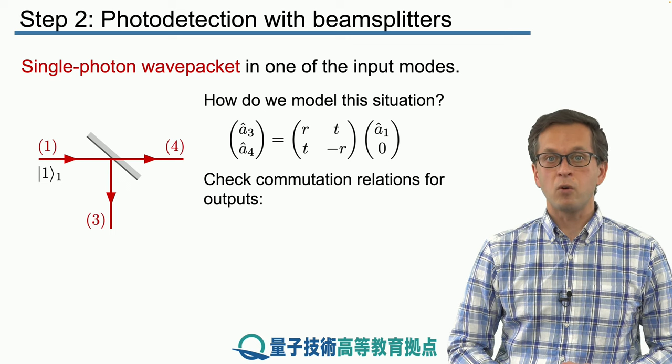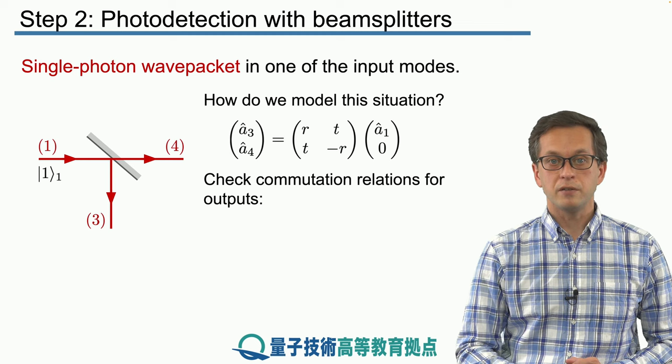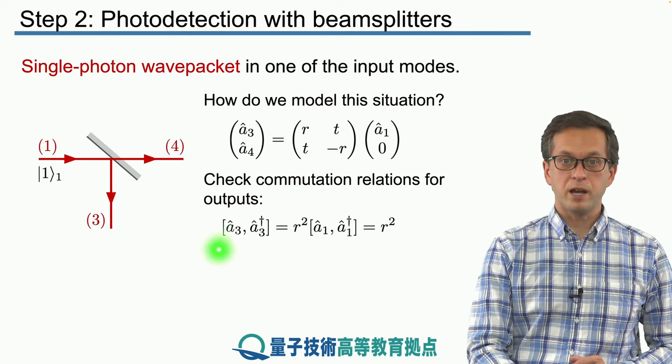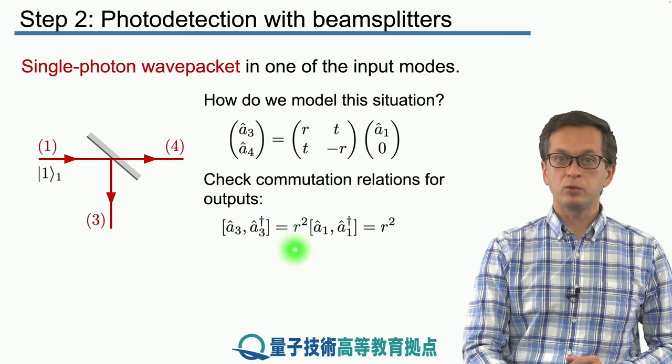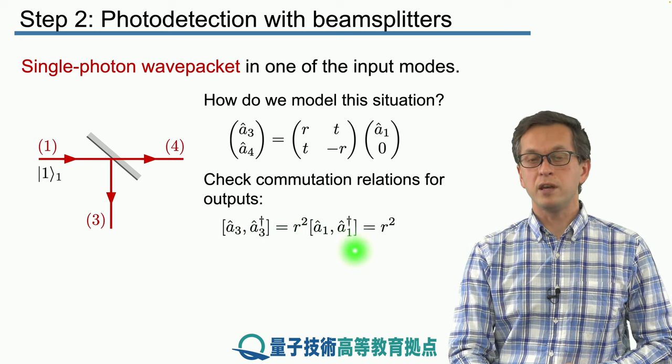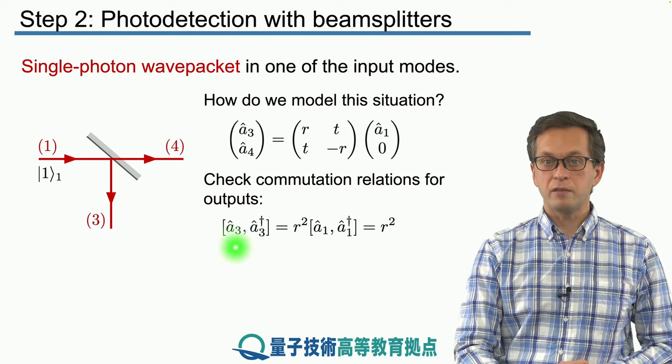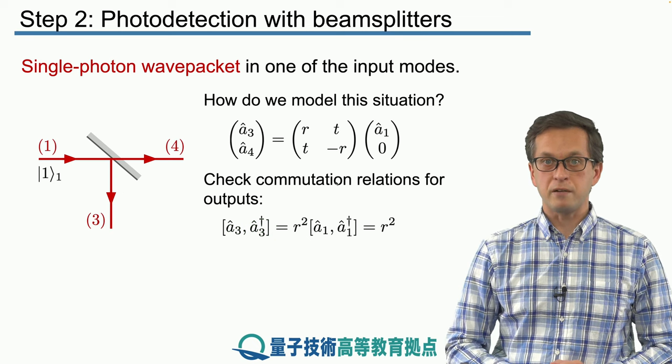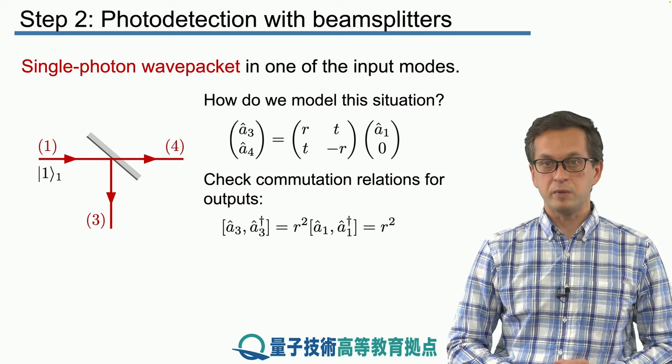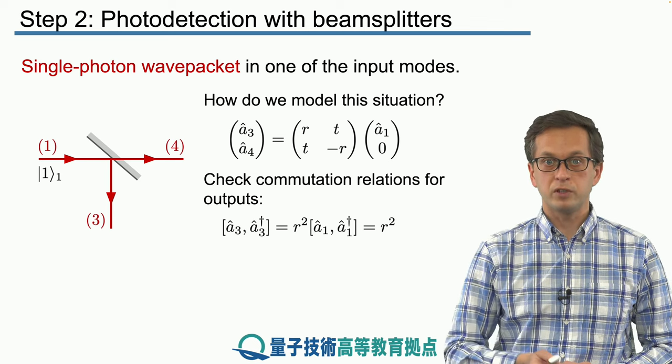Now just to check that things are okay, we're going to compute the commutation relation of output 3. So we can substitute for A3 and A3 dagger, and what we get is R squared times the commutator of A1 and A1 dagger. We know that this commutator is 1, so the commutator of A3 with A3 dagger is equal to R squared, the probability of getting reflected at the beam splitter. So immediately we see that something is wrong with our model of the beam splitter.